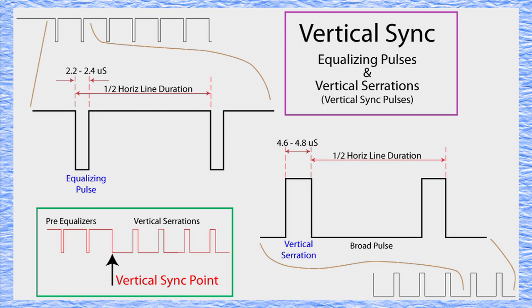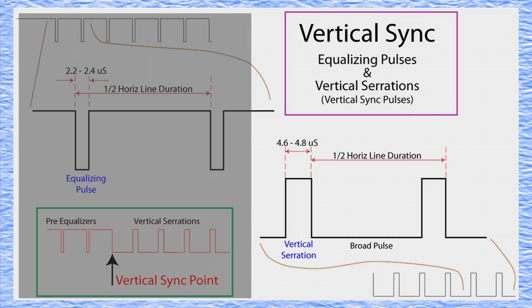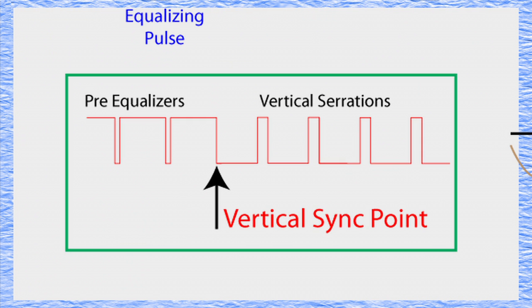Next, the serrations pulses are the positive-going pulses. They are followed by what's called the broad pulses, which are the negative part. And they, too, are spaced at half-horizontal duration intervals. And lastly, here is the exact trigger point for vertical sync.